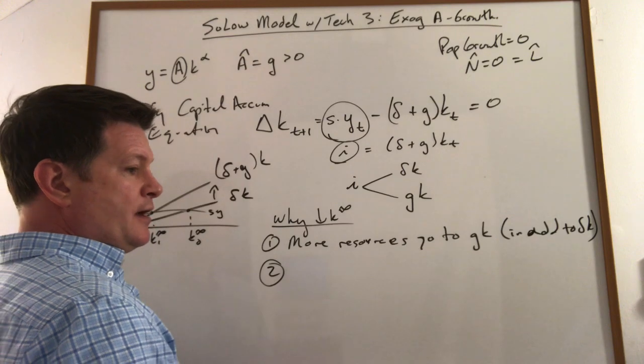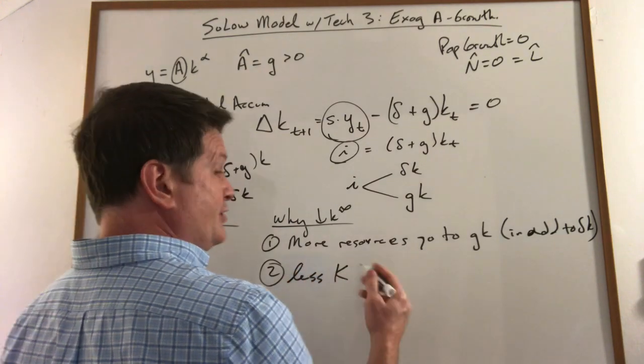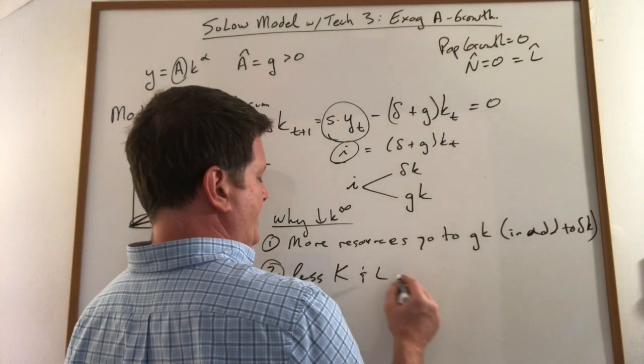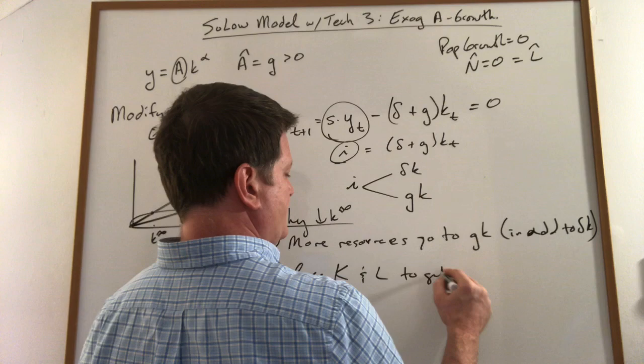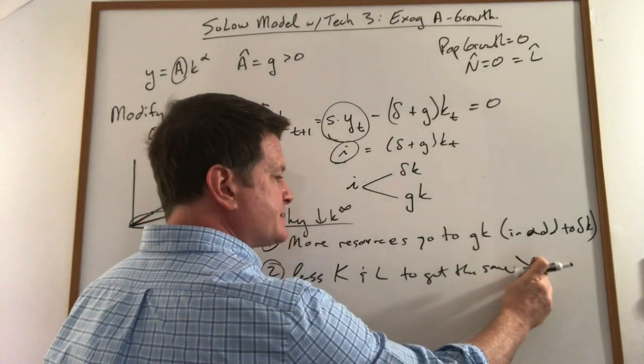Two, we can do more with less. We need less capital and labor to get the same output now. That's a Y, not an X.